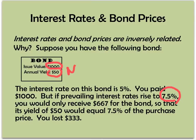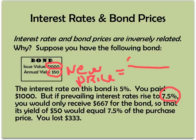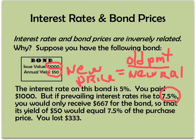However, you can sell your bond at a price that would make the $50 payment equal to 7.5%. The new price is going to be the old payment — in this case $50 — divided by the new rate as a decimal. So if we divide $50 by 0.075, we get $667. To make the $50 yield equal to 7.5% of the purchase price, we lost $333.